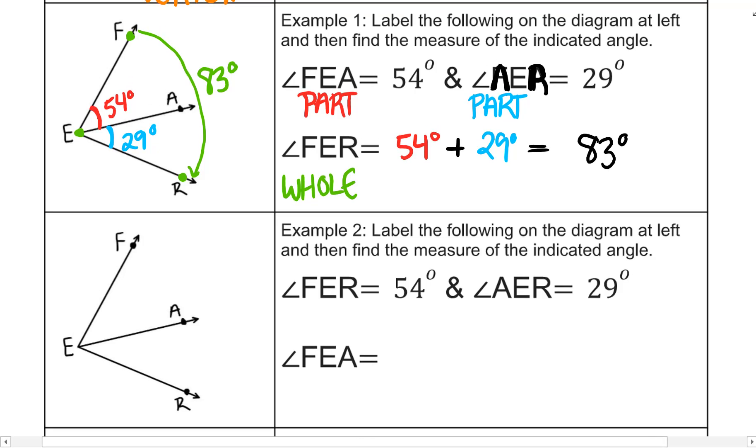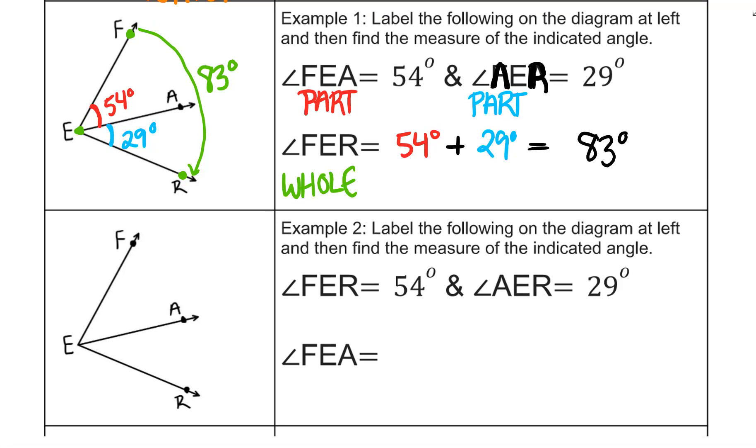Example 2. Label the following on the diagram at left and then find the measure of the indicated angle. So FER is now 54 degrees. That looks like our whole. And then AER, angle AER is the angle between these three points. That one is 29 degrees.